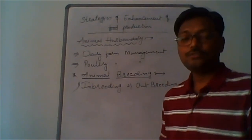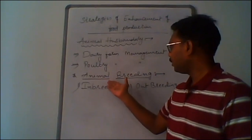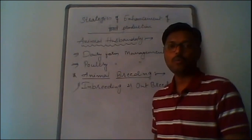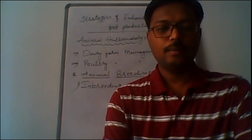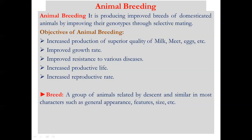Animal breeding helps enhance food production. There are two important types of breeding patterns: inbreeding and outbreeding. Animal breeding is producing improved breeds of domesticated animals by improving their genotypes through selective mating, using conventional and artificial methods. The objectives are to increase production of superior quality milk, meat, and eggs; improve growth rate; improve resistance to various diseases; and increase productive life and reproductive rate.